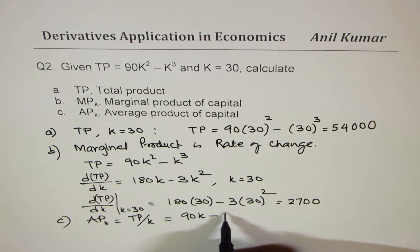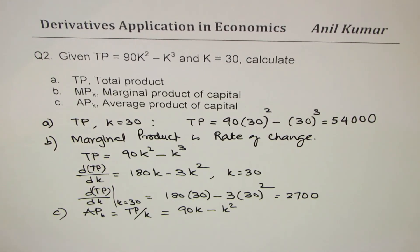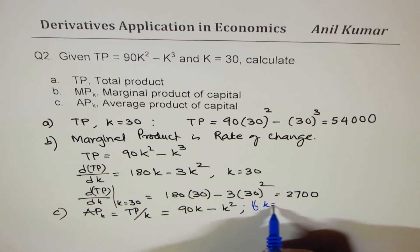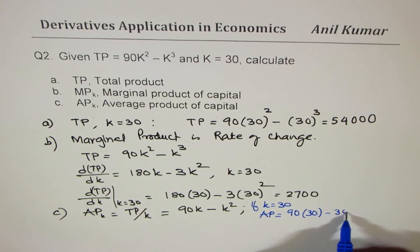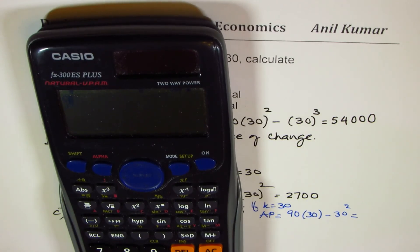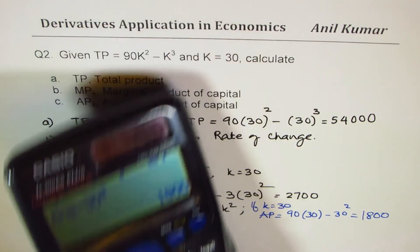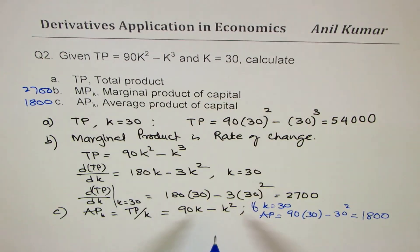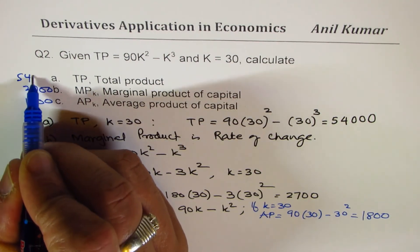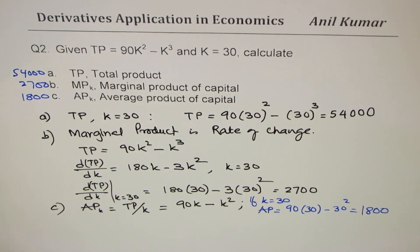Part C — average product of capital: TP divided by k equals 90k minus k^2. At k equals 30: 90 times 30 minus 30^2 equals 1,800. So the answers are: TP equals 54,000, MPK equals 2,700, and APK equals 1,800. I hope it makes sense. Feel free to write a comment, share your views, and if you like and subscribe that would be great. Thanks for watching and all the best.